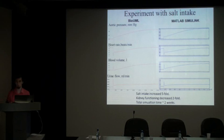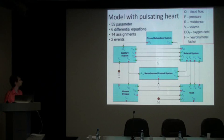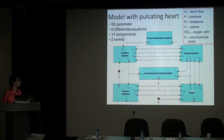The next model is a human cardiovascular system model with pulsating heart, created by Soledgenikov in 1994. The model represents the human circulatory system as a set of reservoirs, with blood circulating across them under the influence of a pulsating heart. The reservoirs are the venous system, arterial system, and heart. The heart is modeled as a pump switching between two stages: systole and diastole. There are capillaries as a buffer between the arterial and venous system.